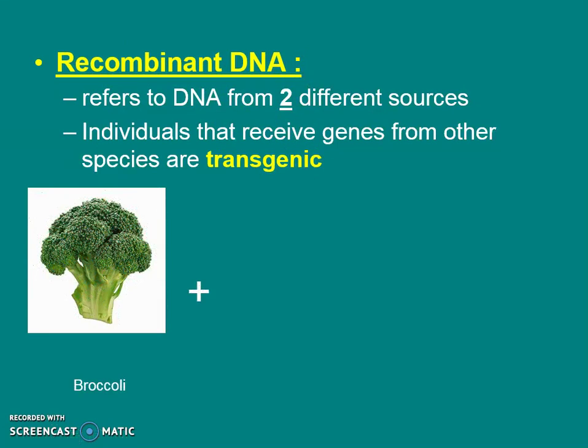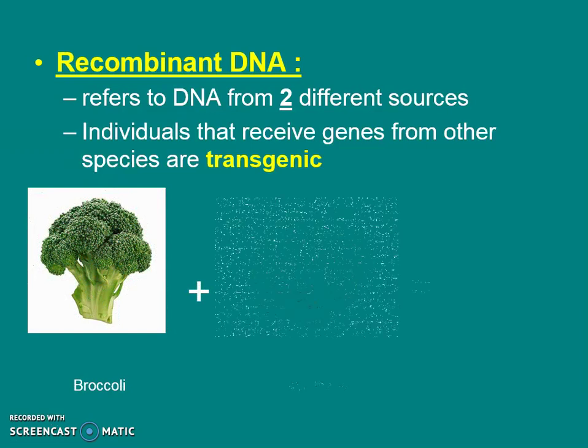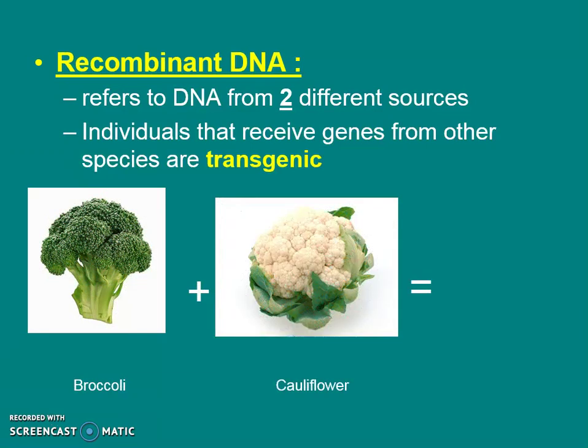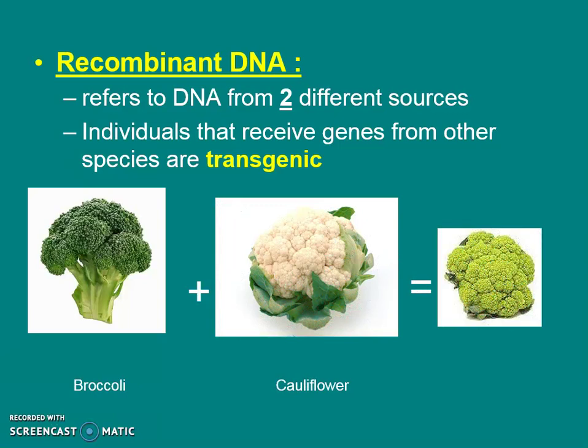For instance, I can take genes from broccoli and combine them with genes from cauliflower, and I can make a transgenic food organism called broccoflower. Now not everyone will want to eat broccoflower — I'm not sure if it's a good idea or not. And that's something we have to consider.